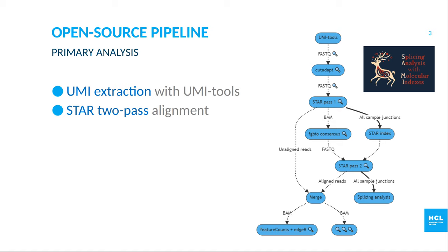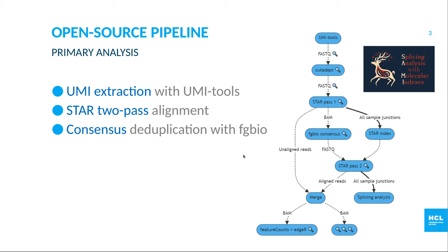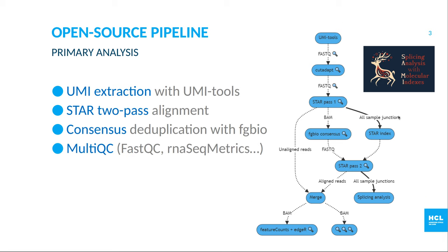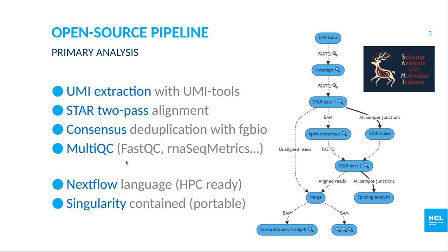We use mapping coordinates from pass one to deduplicate UMIs and get consensus reads with fgbio, and then these reads are aligned during pass two. Quality checks are collected all along the pipeline and presented with MultiQC. The entire pipeline is written in Nextflow, so it's easy to run on any cluster or cloud service, and all dependencies are integrated in a single container so it can be installed anywhere.